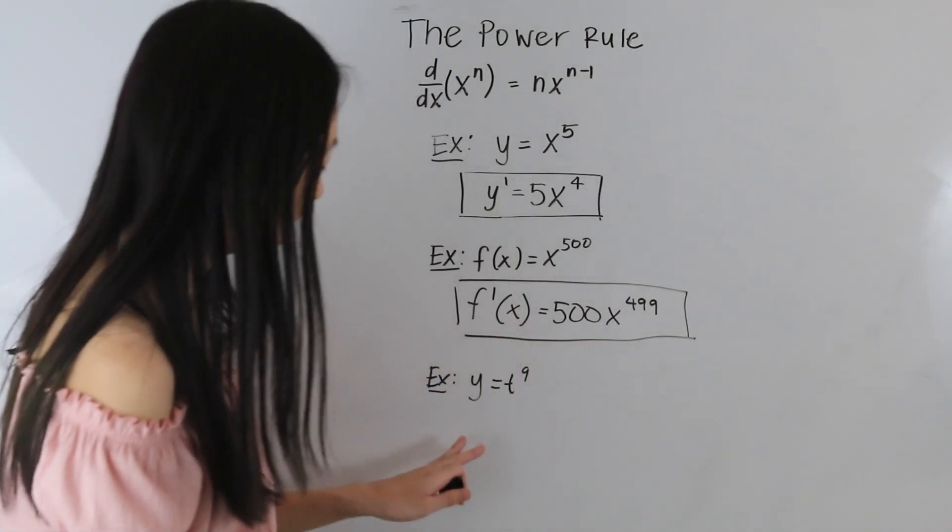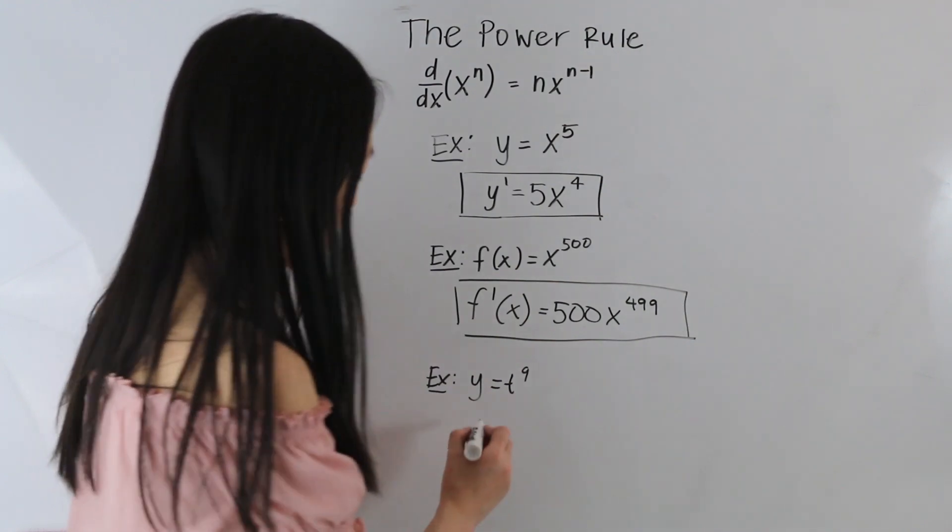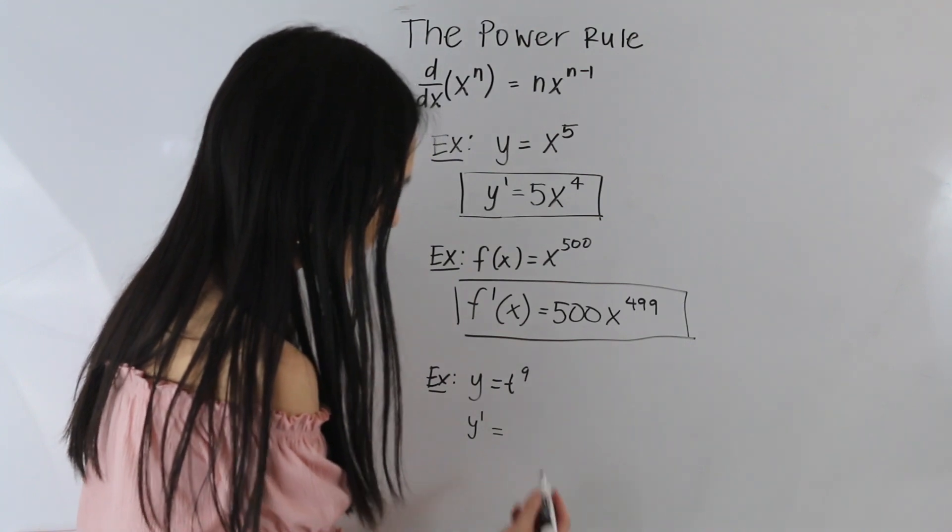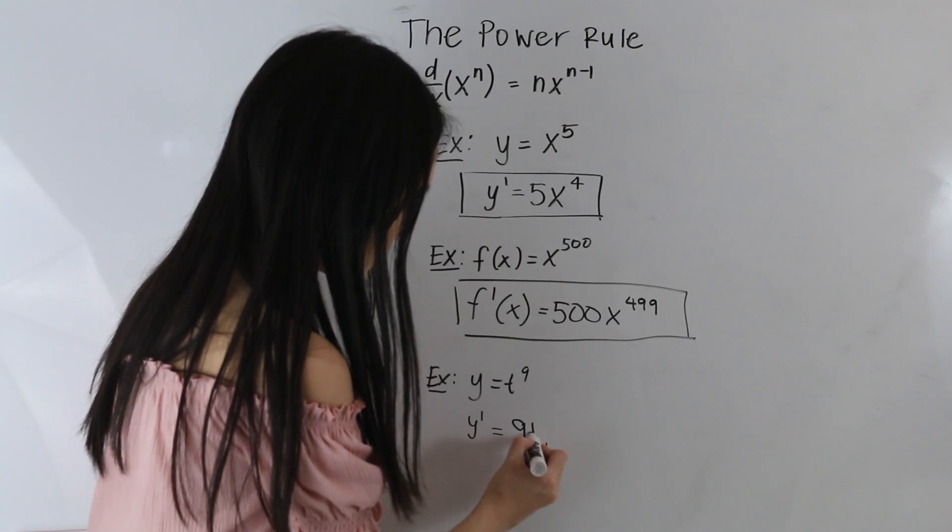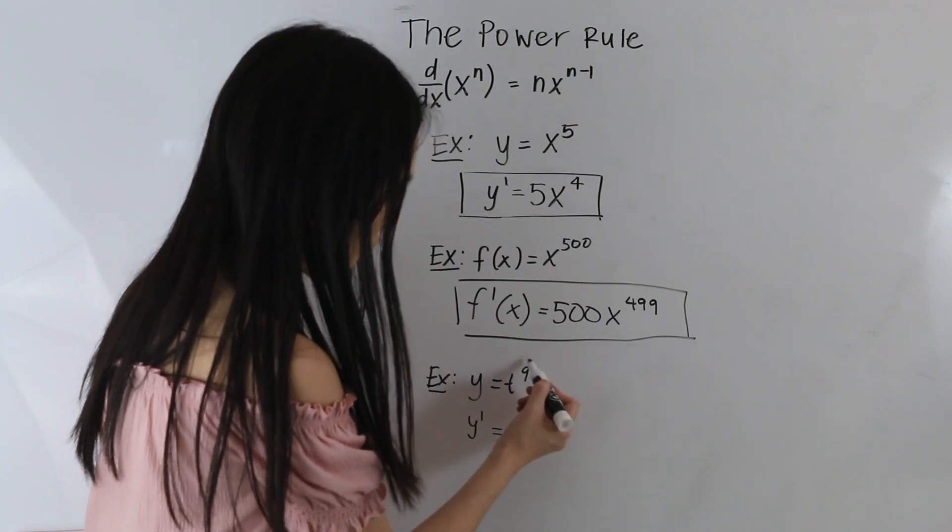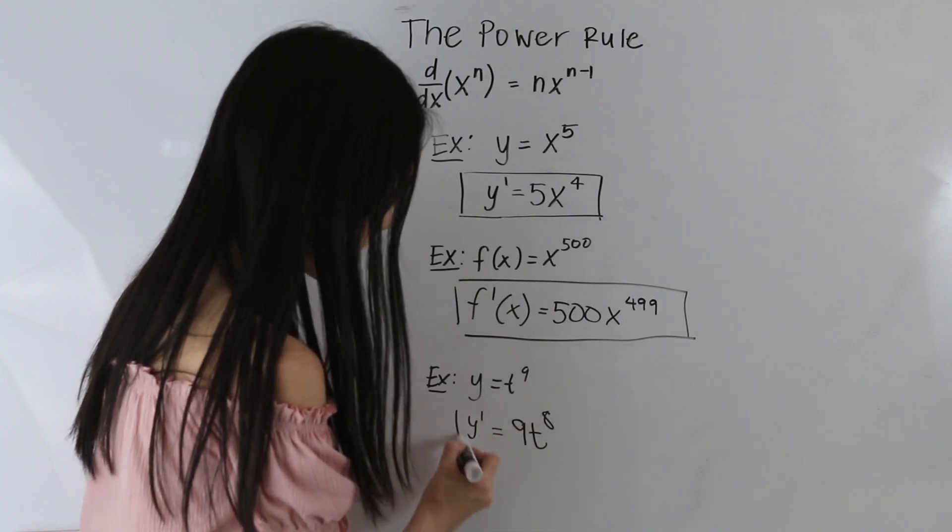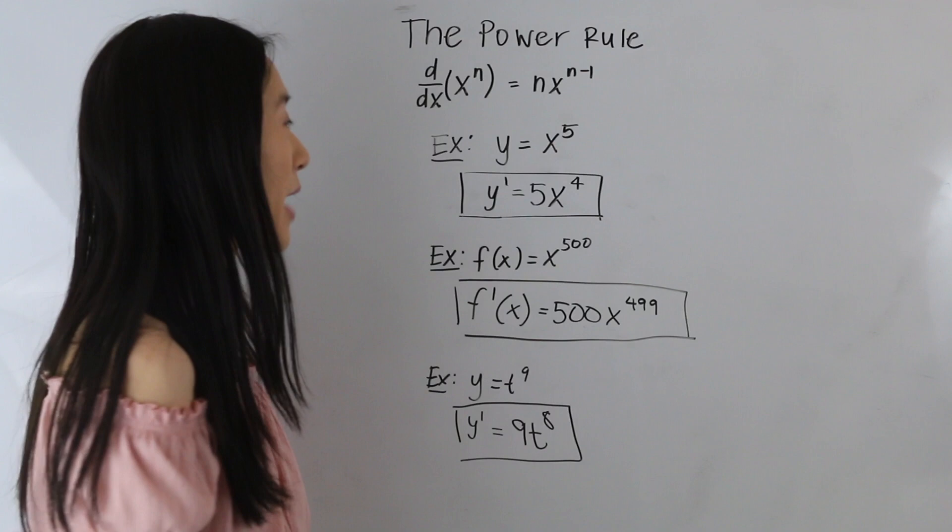And then here we have y is equal to t to the ninth. So let's go ahead and write y prime, and this is equal to, first we bring the power down. So we have 9, and then we have t, and then we subtract 1 from the power. So we have 9 minus 1, which is 8. So we have y prime is equal to 9t to the eighth power.